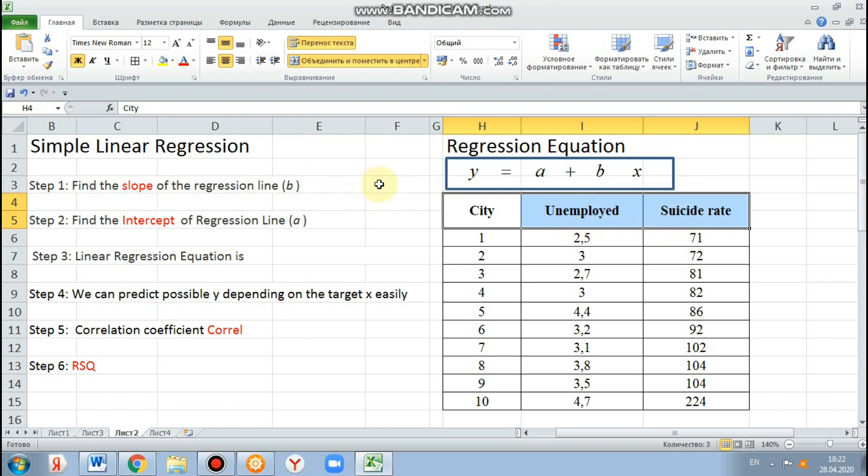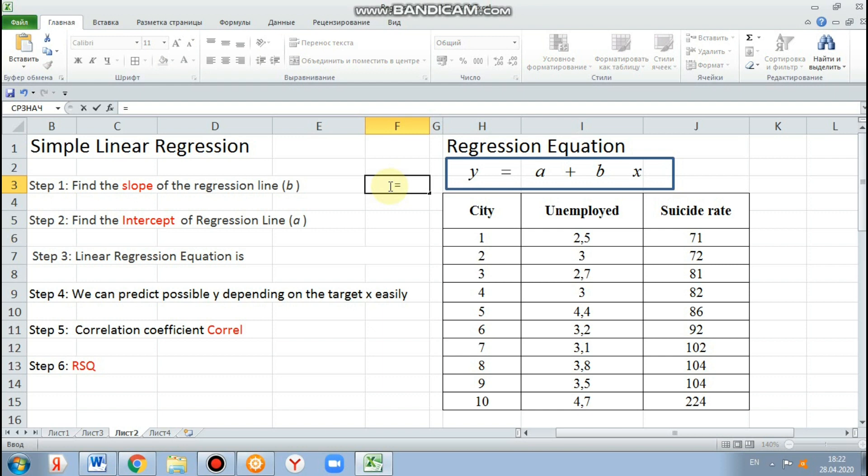The first step we use the function slope. In Russian, it's naklon. We select data. The first is y, the second is x.